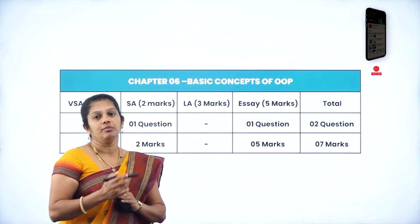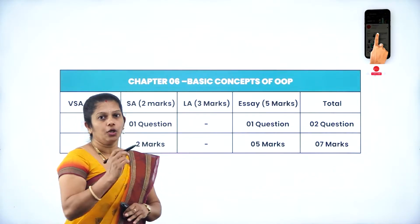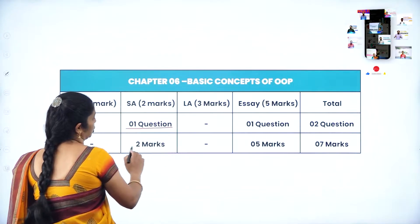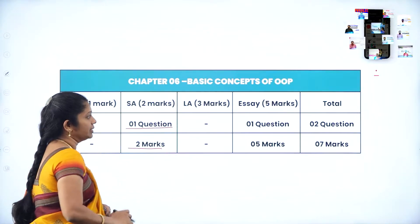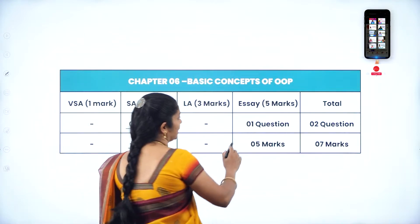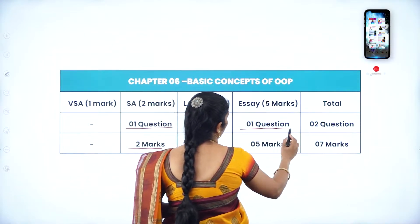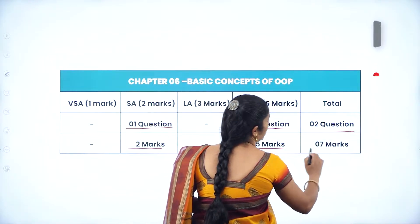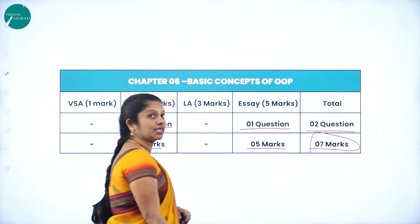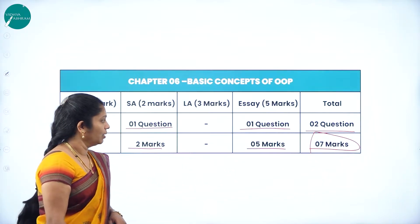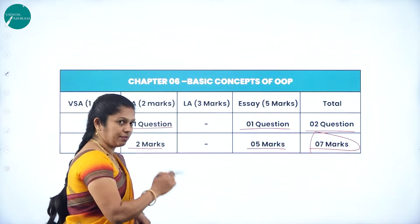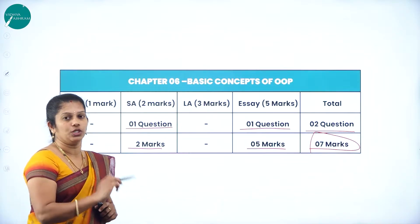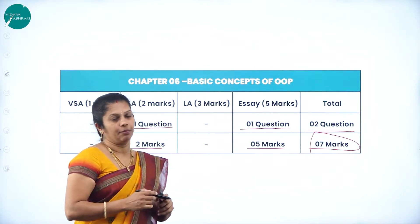In the annual exam, from this chapter, you may expect two questions. One is in Part B — one question for two marks. And one more is in Part D — one question for five marks. Totally two questions. The total weightage of this chapter is seven marks in the annual exam.